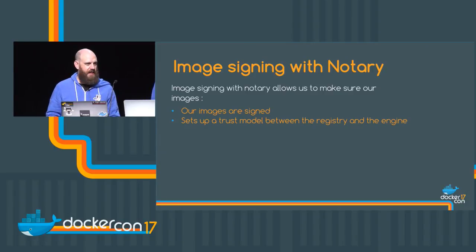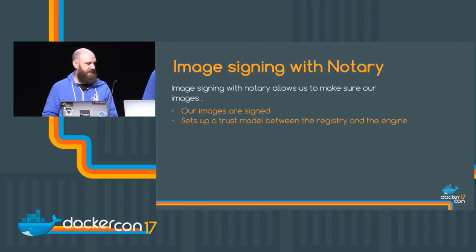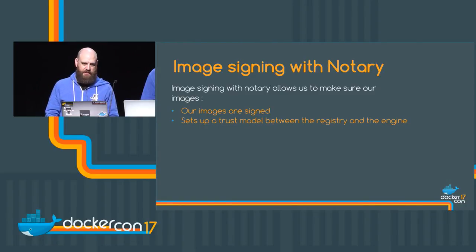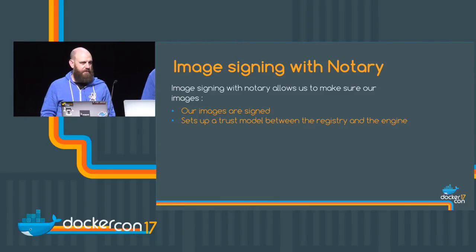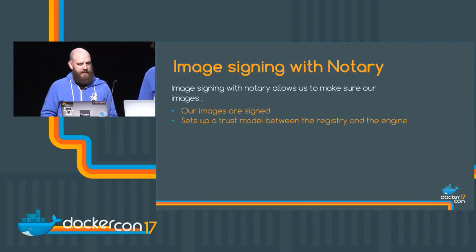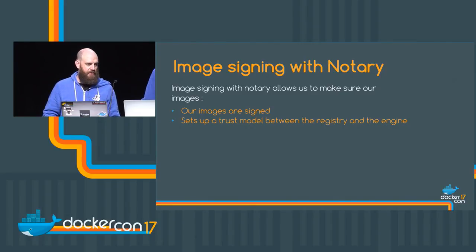Now we're going to go to image signing with Notary. How many people know what Notary is or have used it? Not many - we'll go through this slowly because it is a little bit complex. Basically, Notary gives an image a crypto ID, and that crypto ID is trusted by your Docker engine at runtime. If you set up Notary to only allow your engine to run signed containers, and someone ran 'docker run nginx', it would throw an error saying this is not a trusted container - it needs to be signed with the crypto hash that your Notary server has. You can protect yourself from anything getting in from outside that you don't want, and you know that container hasn't changed. If there is a change and Notary detects it, it will throw an error and not spawn it.